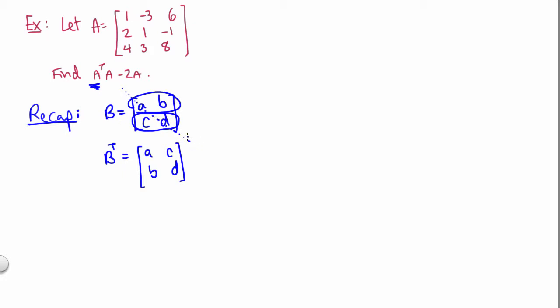So the entries on the diagonal will stay in place, and the B and the C are going to change position here. So that's a little recap of the transpose of a matrix.